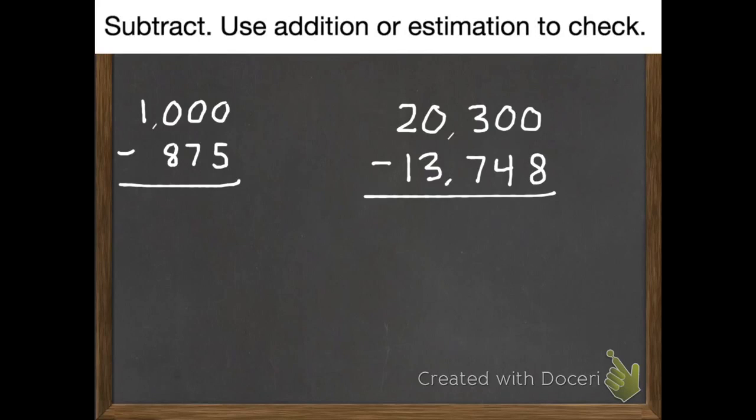First practice problem. We need to borrow all the way from our thousands. So now we have no thousands. That thousand turns into ten hundreds. We need to borrow one. That hundred turns into ten tens. We need to borrow one of those, which gives us ten ones.